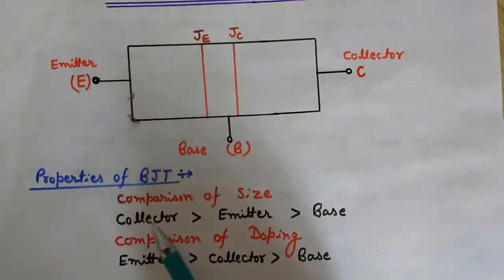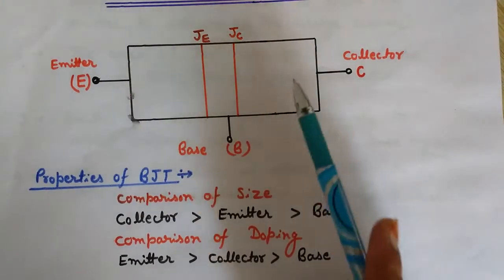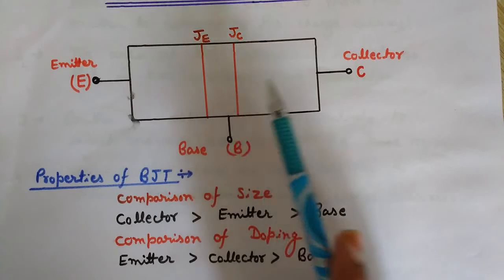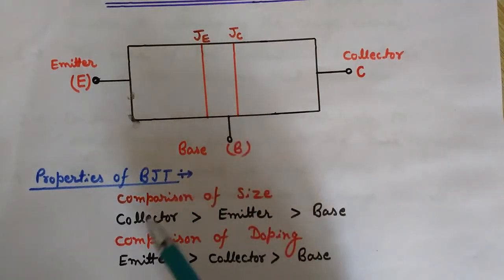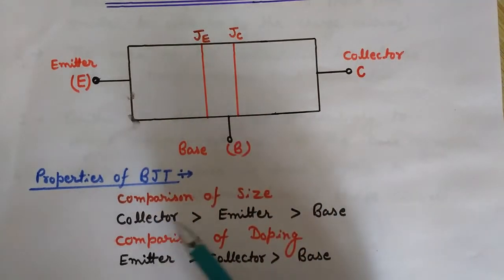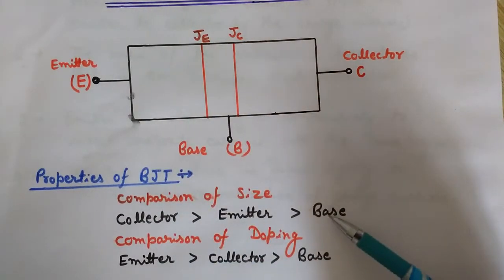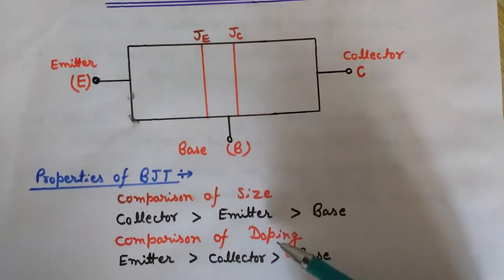Comparing the sizes of the three regions — emitter, base, and collector — the size of the collector is the largest and the size of the base is made the smallest.